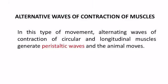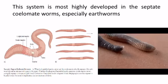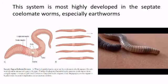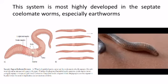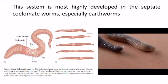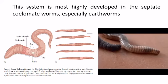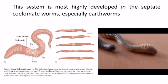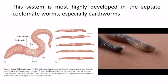The next type is alternating waves of contraction of muscles. In this type of movement, alternating waves of contraction of circular and longitudinal muscles generate peristaltic waves and the animal moves. This system is most highly developed in the septate coelomate worms, especially in the earthworm.